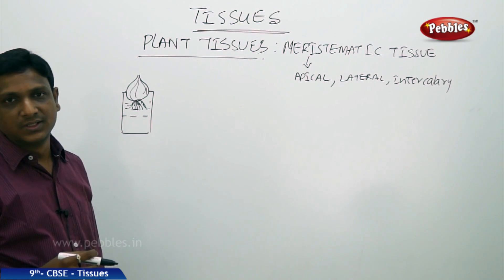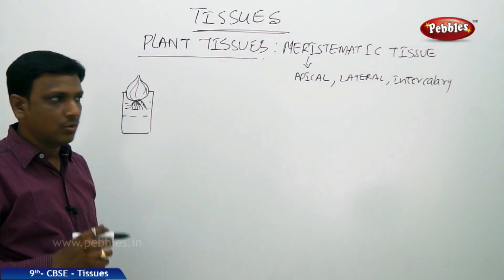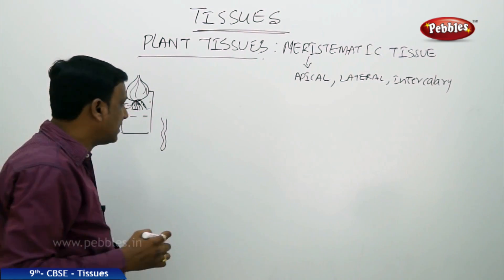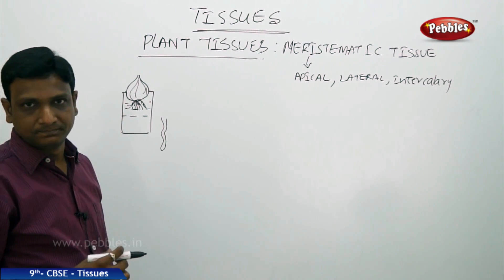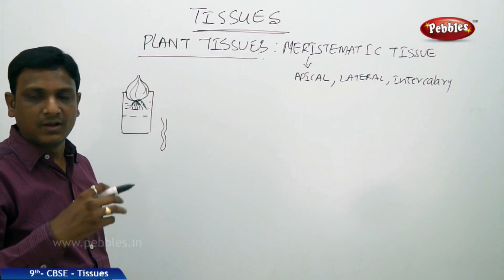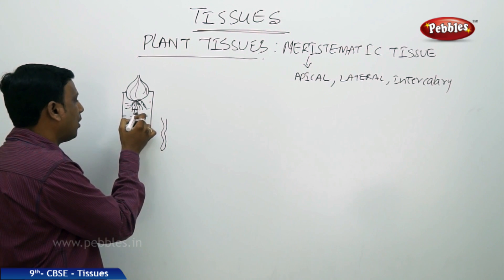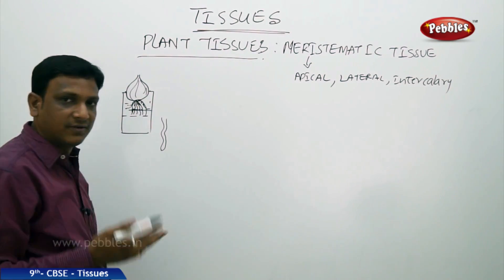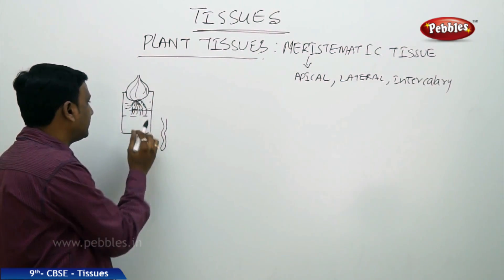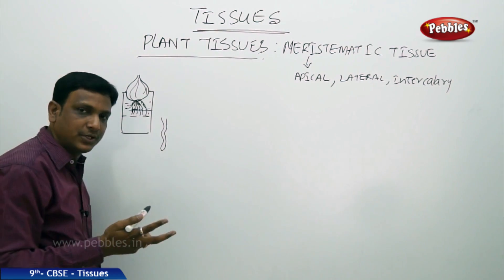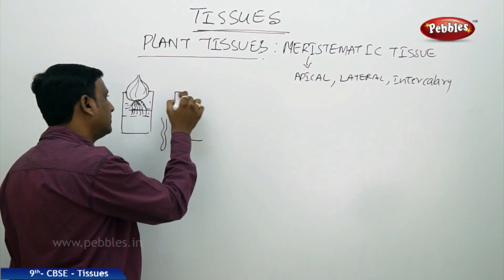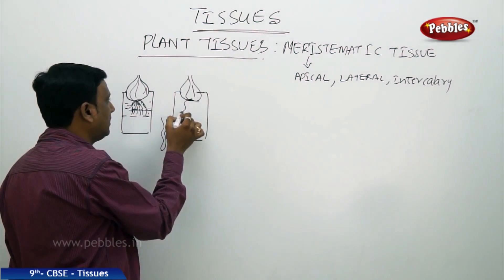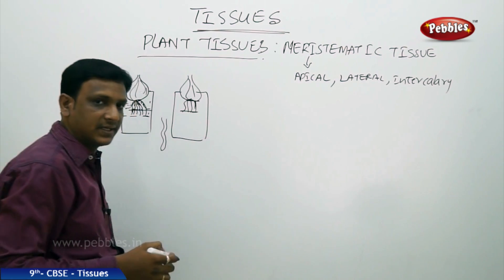One particular part of the onion — the roots — is actively growing. Even within the root, we ask: which part is actively growing? After observing for three to four days, you find the roots have grown long. You then cut one centimeter from the tips of the roots and place the onion back in the beaker.